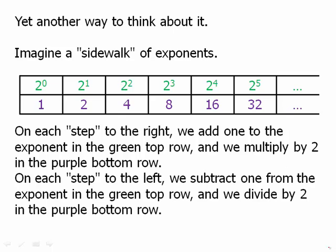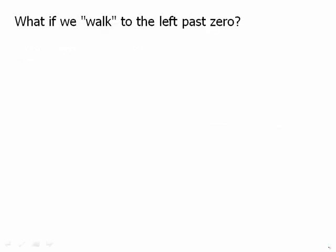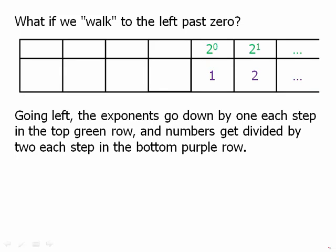Each step to the left we subtract 1 from the exponent and we divide by 2 in the bottom row. As we start taking steps to the left, we're subtracting 1 from the exponent and dividing the purple number in the bottom by 2. What would happen if we walk to the left of 0? Going to the left, the exponents go down by 1 each step in the top row and the numbers get divided by 2 each step in the bottom row. The exponent would go down from 0 to negative 1 and we would divide 1 by 2, so we'd get 1 half. 2 to the negative 1 equals 1 half.